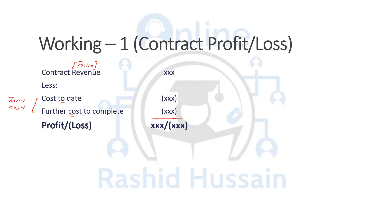When you have a profit, it is going to be recorded based on the stage of completion. When you have a loss, it is going to be recognized immediately — this is an application of the prudence concept that loss should be immediately recognized.